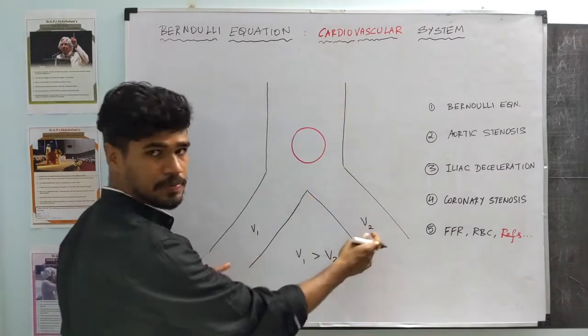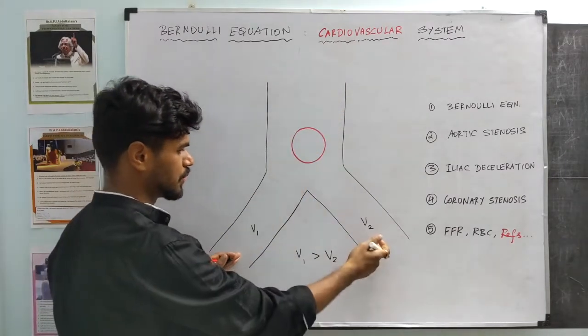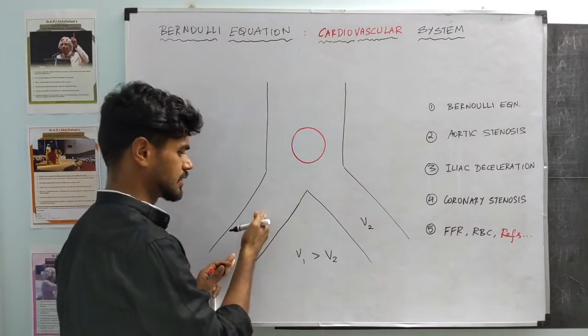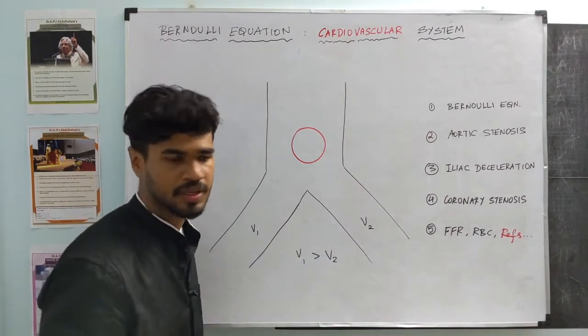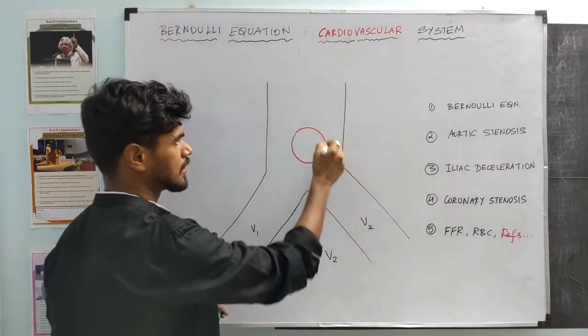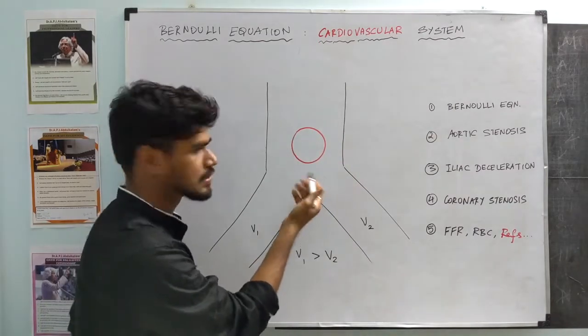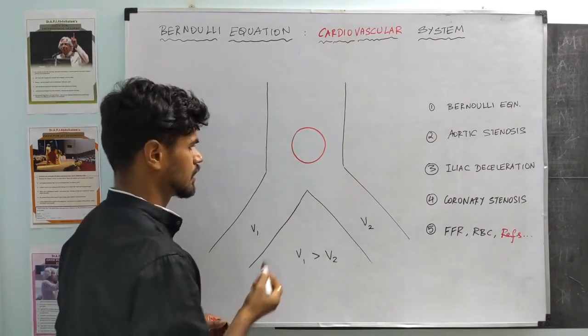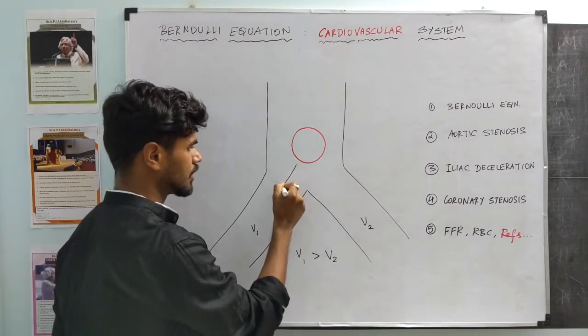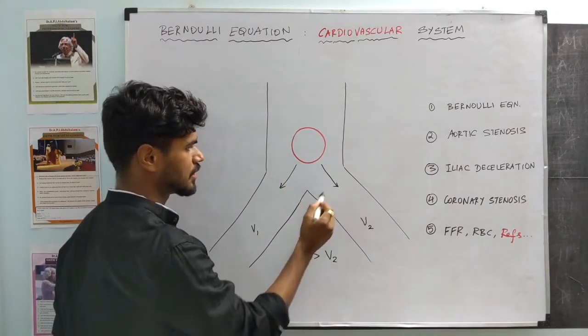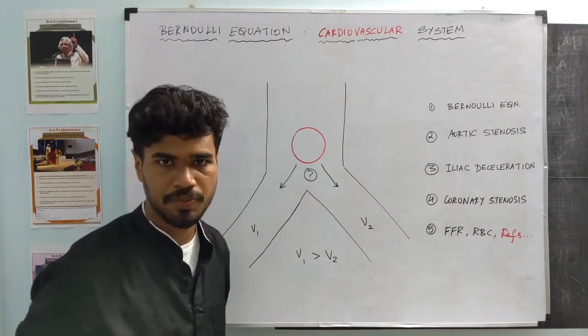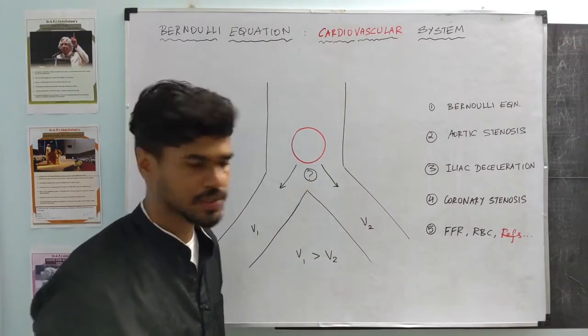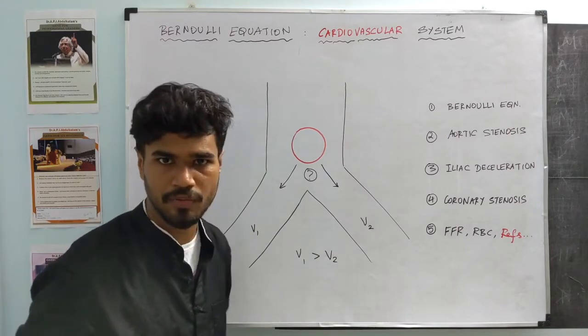I will get started with an interesting question. Say we have a bifurcating blood vessel, a blood vessel that branches into two. The velocity in this branch V1 is higher than the velocity at this branch V2. Given that, let's consider a spherical red blood cell. Is this RBC likely to take this path or is it likely to take this path? Try to answer that question.